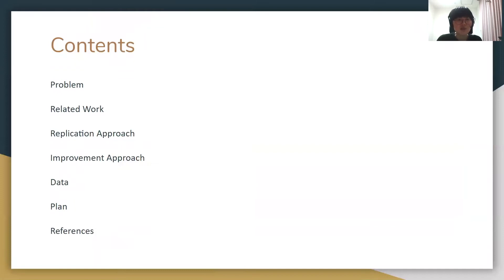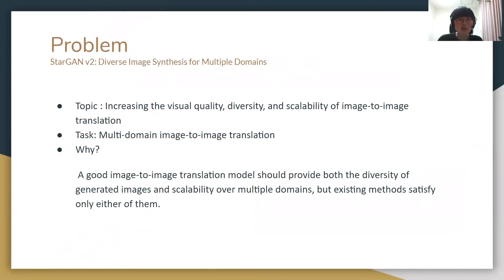Let's first start with the problem we will address. Our main paper's topic is increasing the visual quality, diversity, and scalability of image-to-image translation. Our paper deals with the task of multi-domain image-to-image translation, because a good image-to-image translation model should provide both the diversity of generated images and scalability over multiple domains.